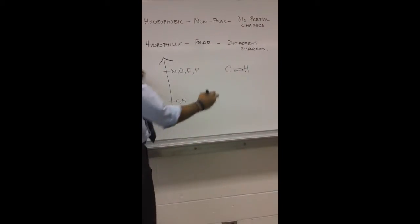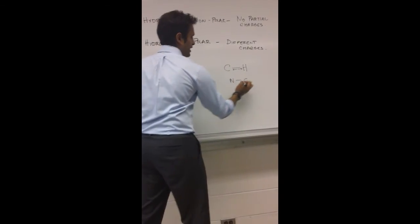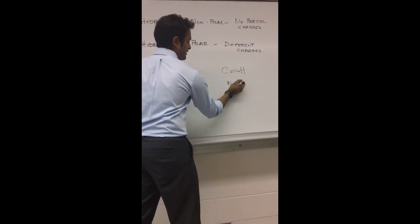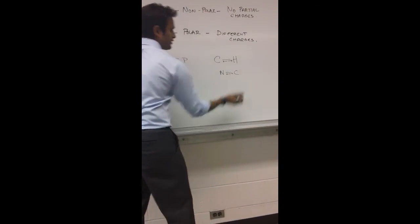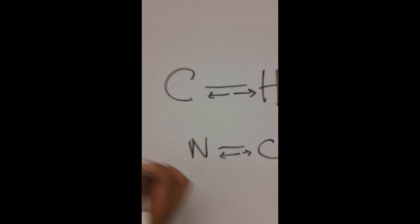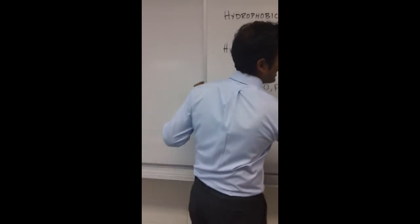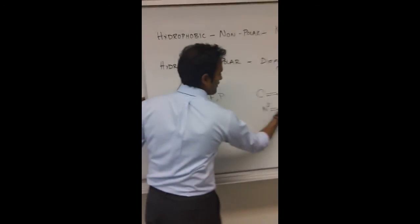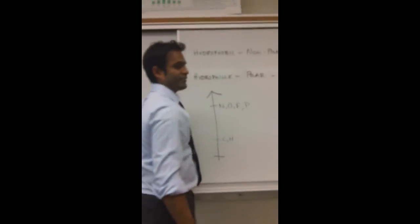Now, if you have a nitrogen bonded to a carbon, then the nitrogen is going to pull the electrons more strongly than the carbon. Make sure you can see those arrows. And that's going to mean that this nitrogen is going to have a partially negative charge, and this carbon is going to have a partially positive charge.